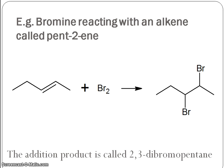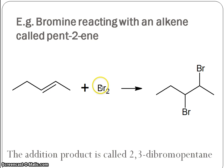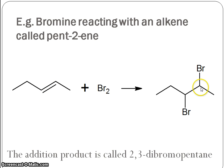Another example of an alkene — this time pent-2-ene reacting with bromine. Again, the double bond is between two carbons; a bromine atom adds on to carbon number two and carbon number three, giving us the single bond and two bromines added on.